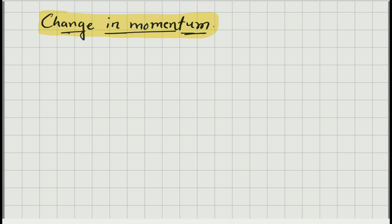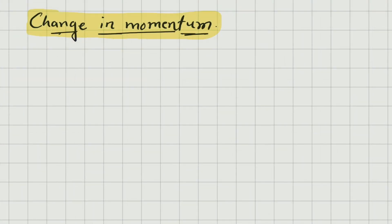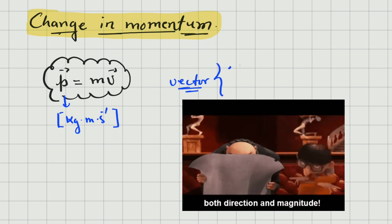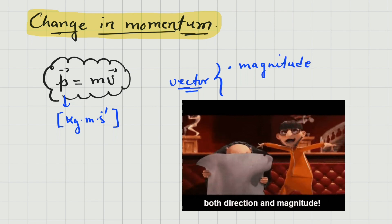In the previous lesson, we defined momentum and spoke about the formula to calculate it. Let's quickly recall: momentum is the product of mass and velocity, the symbol is P, and the unit is kilograms meters per second — because you multiply mass in kilograms by velocity in meters per second. Importantly, momentum is a vector: it has magnitude and direction.